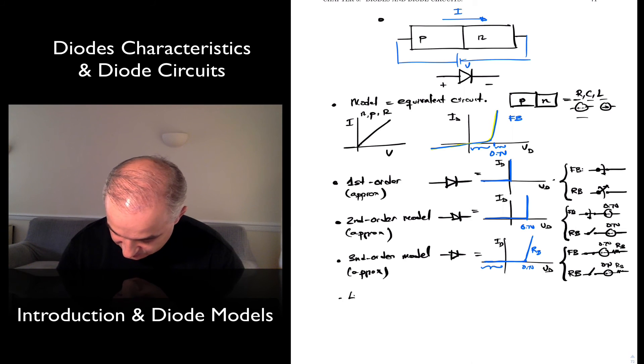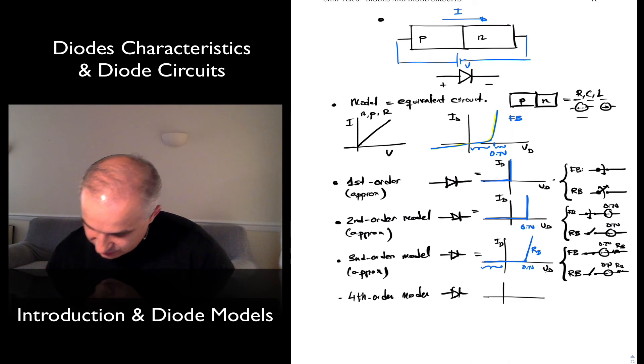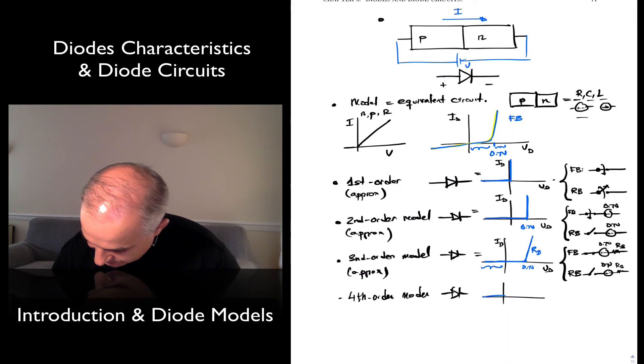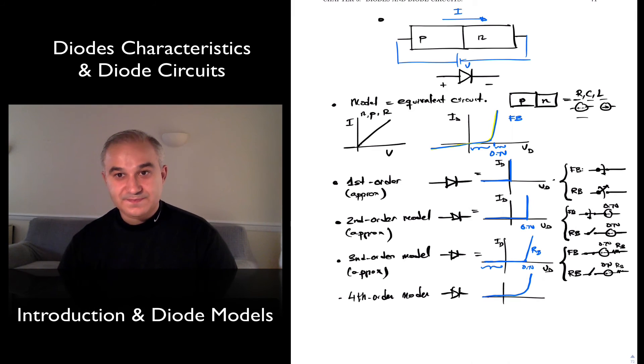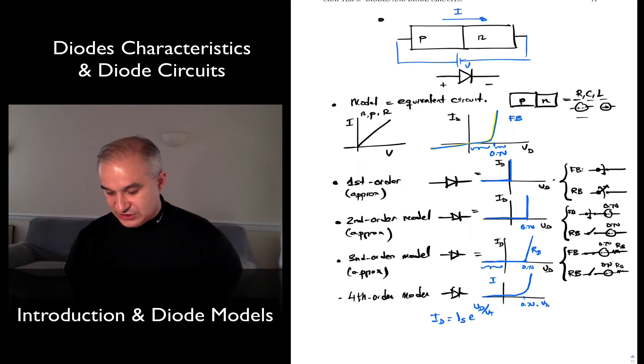A fourth-order model - each one of them is more complicated. We can go ahead and say nothing in the reverse, but we are going to model the exponential relationship here. And so, we are going to say that the current is some saturation current, e to the voltage across the diode over the thermal voltage.